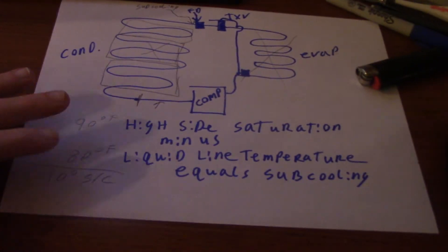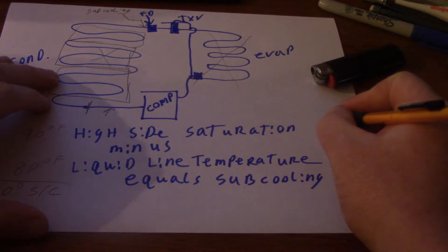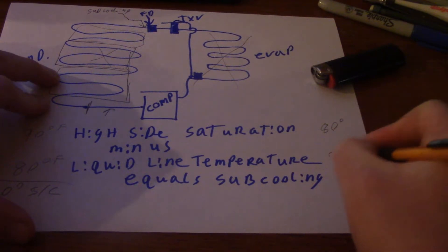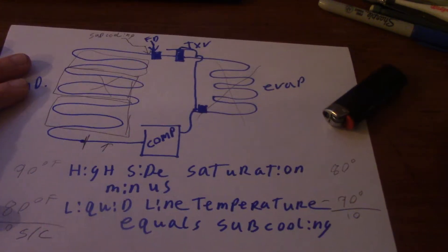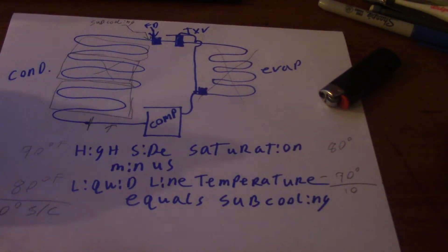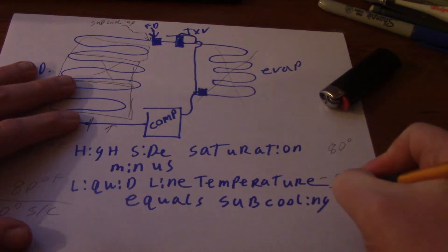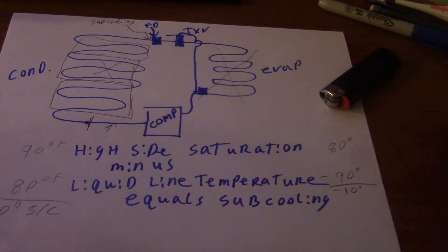If you had a saturation of, we'll say, 80 degrees and a liquid line temperature of 90 degrees, and you did not follow the formula, you might calculate and go, hey, I've got 10 degrees subcooling, this system should be working right. No, you don't have 10 degrees, you did it backwards. You would technically be at negative 10 degrees, which would say there is no subcooling.